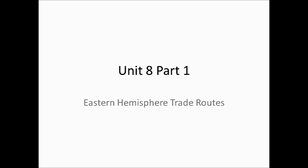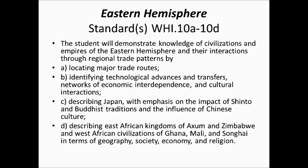This is the Unit 8 Part 1 video, talking about the eastern hemisphere and the trade routes of those places. The standards are World History 10. We're going to talk about locating the major trade routes, the advances that are passed on by trade, and later on we'll talk about Japan and Africa specifically. But right now we're just dealing with trade routes. So what were the major trade routes of the eastern hemisphere from about 1000 to 1500 AD?